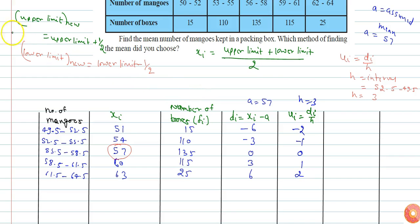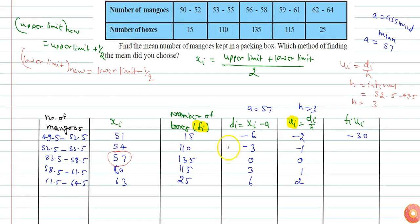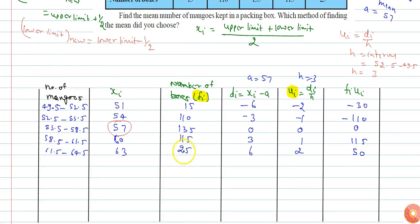Now the next column is for fi into ui. Here the column of fi is here, and here is the column of ui. So 15 into minus 2 is minus 30, 110 into minus 1 is minus 110, 135 into 0 is 0, and 115 into 1 will be 115, and 25 into 2 which is 50.